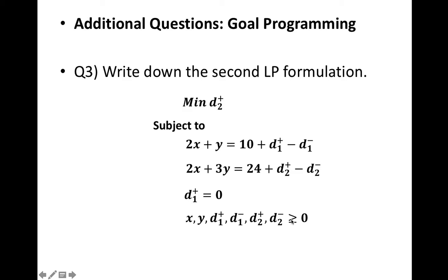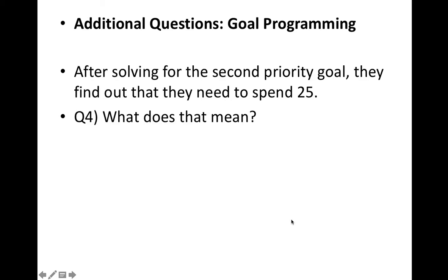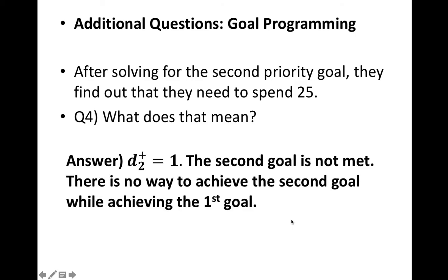So if you solve this problem and say they found out they need to spend 25, not 24. What does that mean? They actually spend one more than 24. This means that d_2^+ is equal to 1 and the second goal is not met.